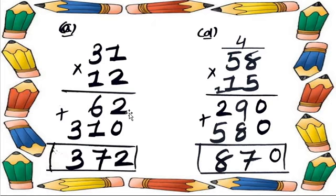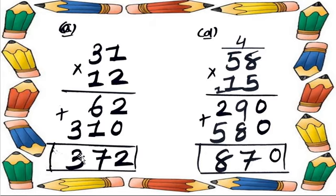Now we do the addition: 2 plus 0 is 2. 6 plus 1 equals 7. Then 3 as it is. So the answer is 372. 31 multiplied by 12 is equal to 372.